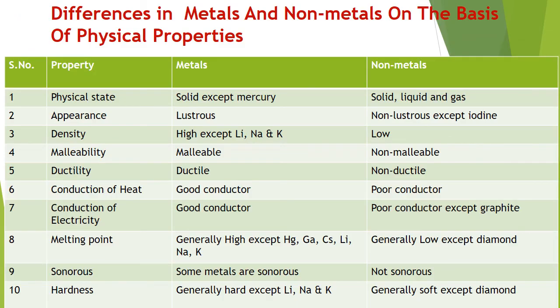Now, differences between metals and non-metals based on their physical properties: Physical state — metals are solid except mercury; non-metals are solid, liquid, or gas. Appearance — metals are lustrous; non-metals are non-lustrous except iodine. Density — metals have high density except lithium, sodium, and potassium; non-metals have low density.